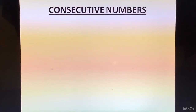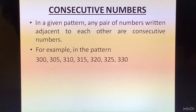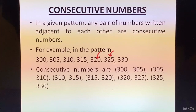Consecutive Numbers: In a given pattern, any pair of numbers written adjacent to each other are consecutive numbers. For example, in the pattern 300, 305, 310, 315, 320, 325, 330 — each pair of adjacent numbers are consecutive numbers.